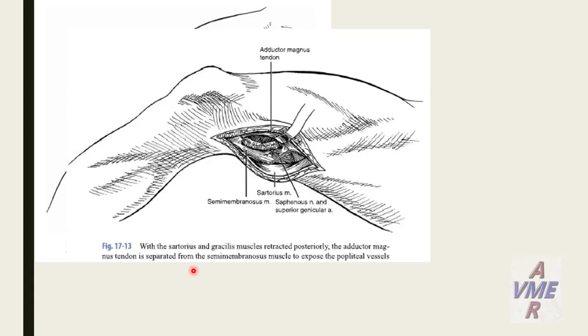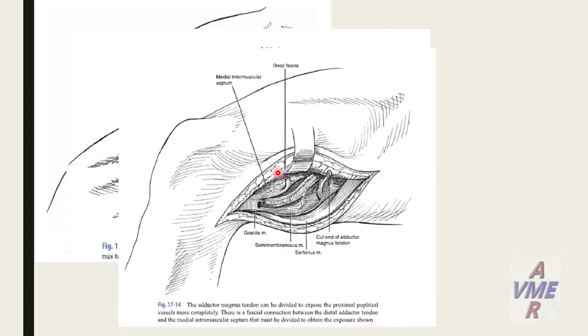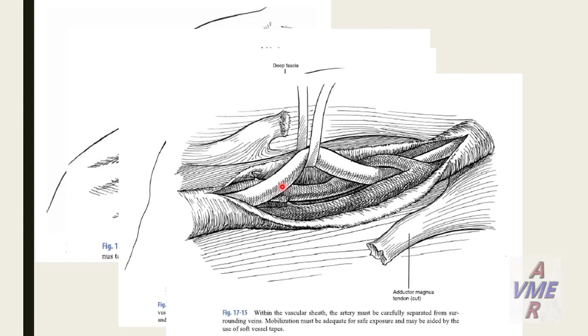How to perform the operation. For exposure of the popliteal artery above the knee: incision of the medial supragenicular exposure lying along the anterior border of the sartorius muscle. With the sartorius and gracilis muscles retracted posteriorly, the adductor magnus muscle is separated from the semimembranosus muscle to expose the popliteal vessels. The adductor magnus tendon can be divided to expose the proximal popliteal vessel completely. There is a fascial connection between the distal adductor tendon and the medial intermuscular septum which must be divided to obtain full exposure.